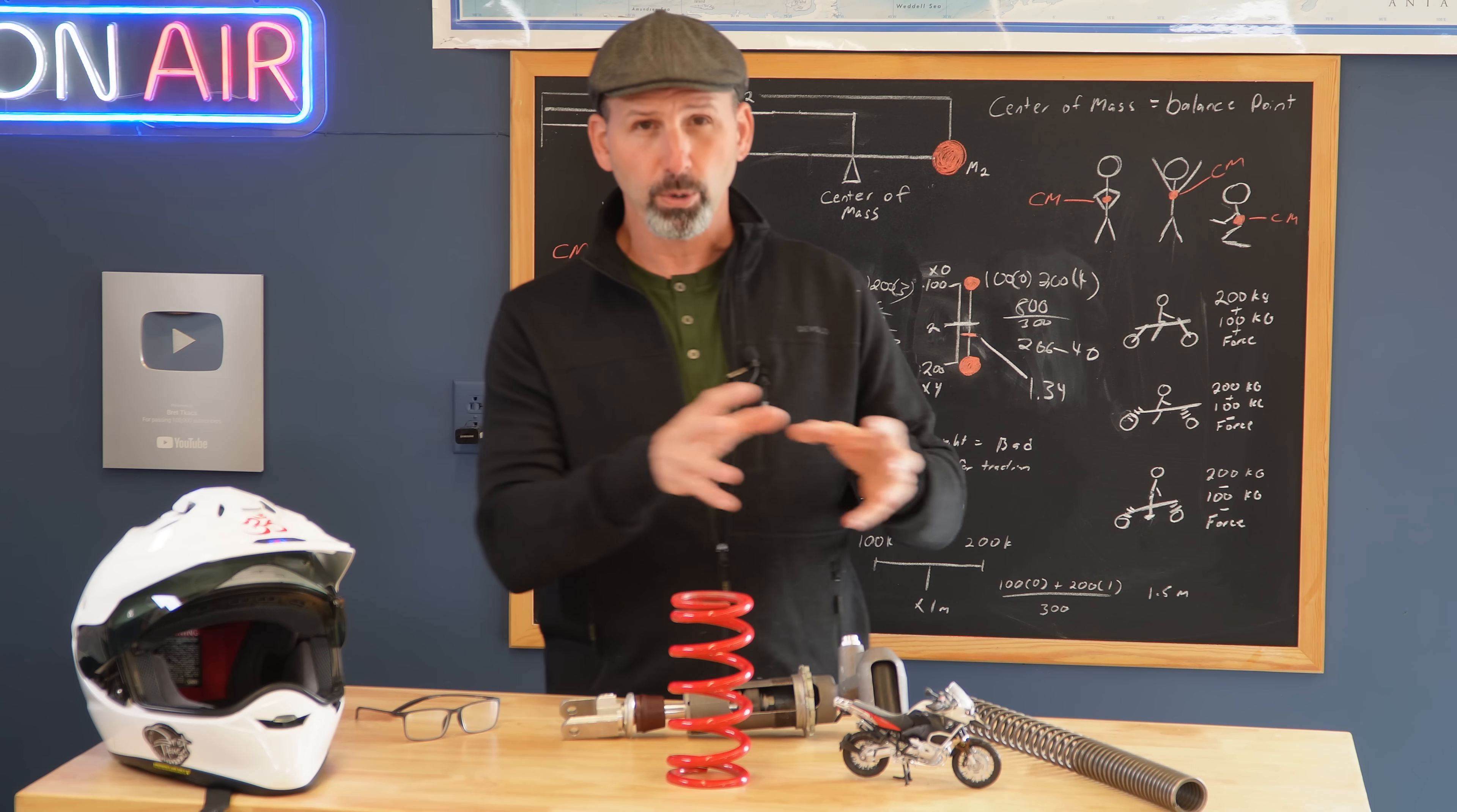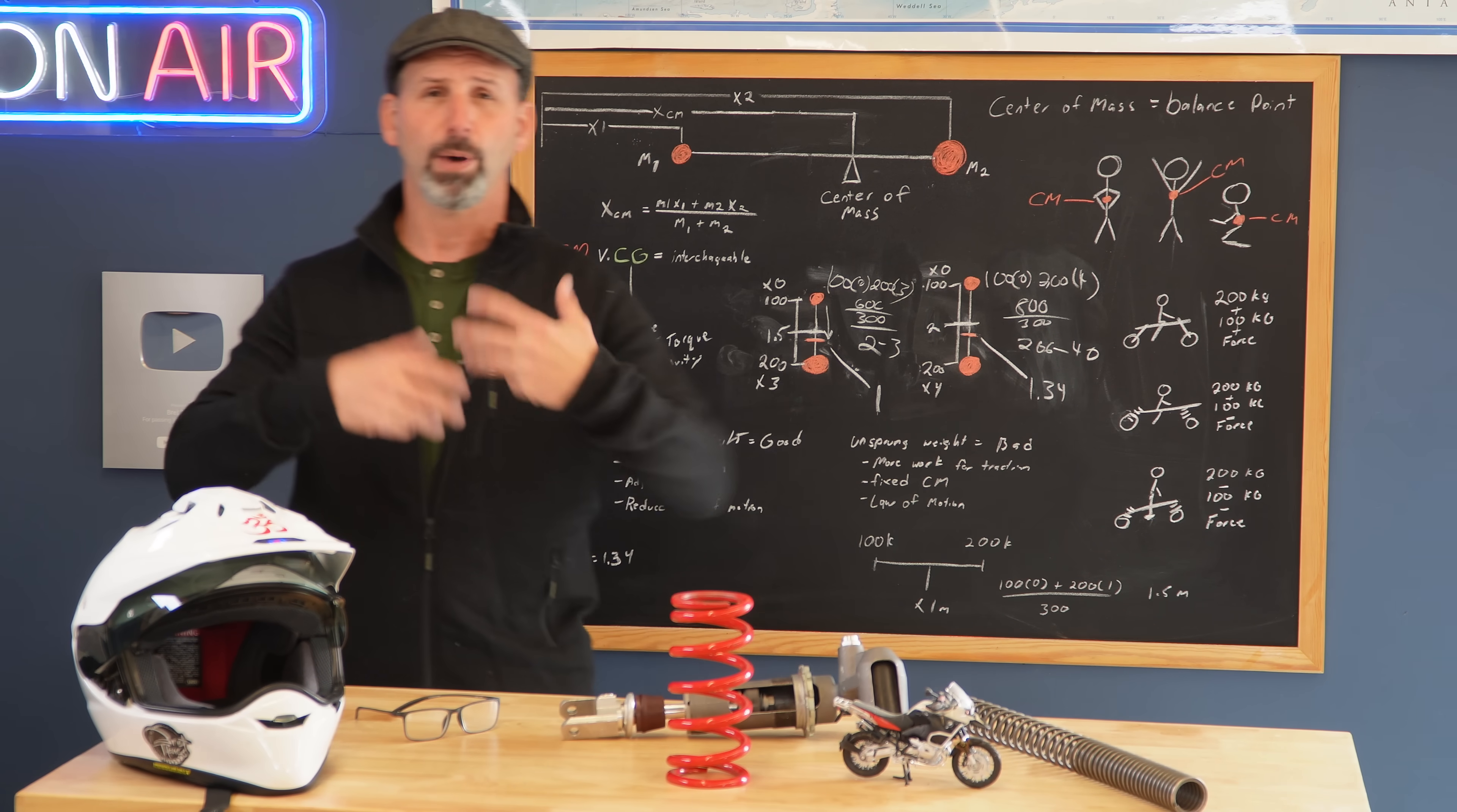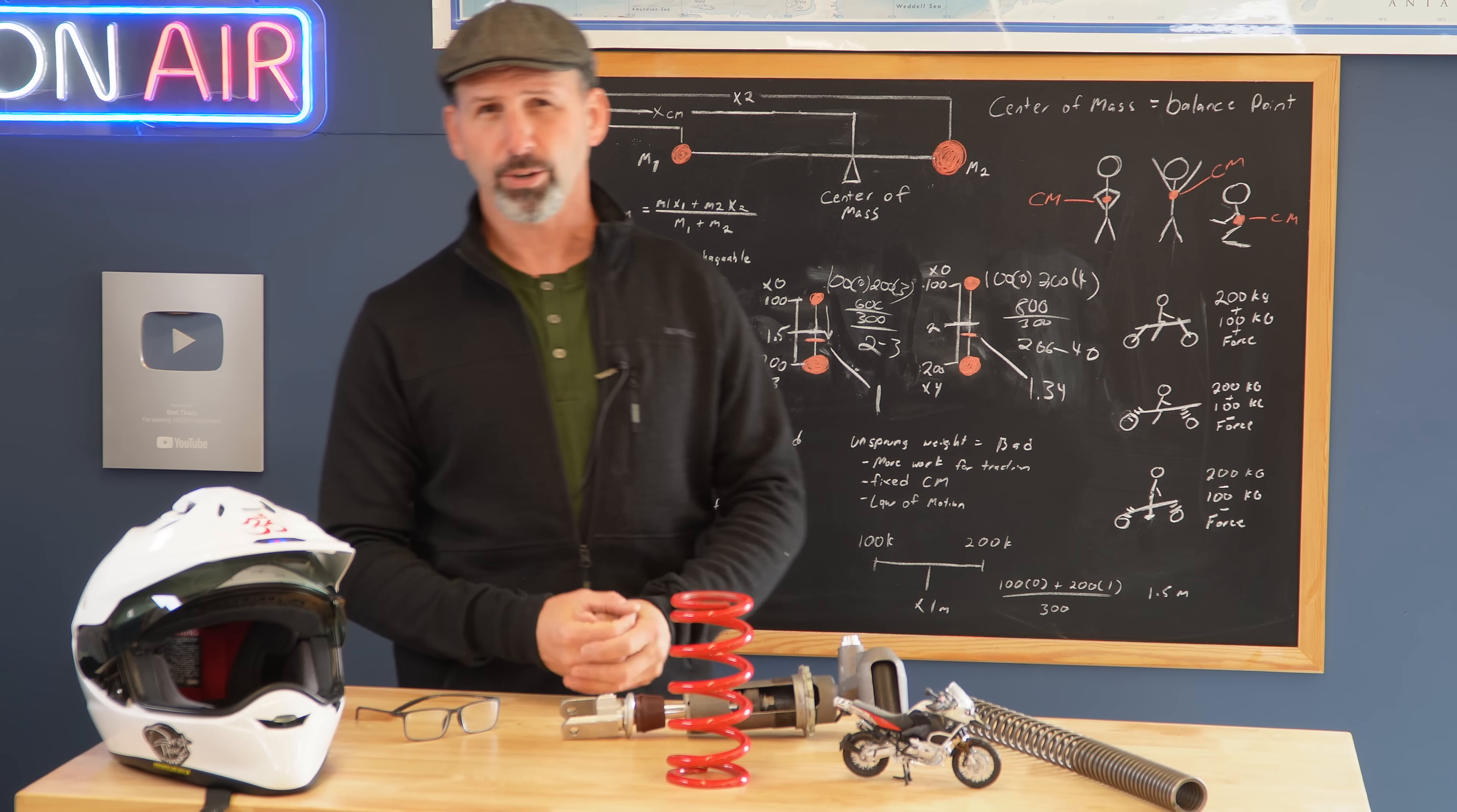That becomes the unsprung weight. You want as little unsprung weight as possible. Sprung weight is not a bad thing. When we have a heavier rider or heavier motorcycle, that gives you some stability and can give you more traction. Also, we can shift and alter where that traction is - that's one of the benefits of standing on a motorcycle. This is why I teach standing in my classes, because we have more effect on where we move that center of mass and how it transfers out to those other aspects.